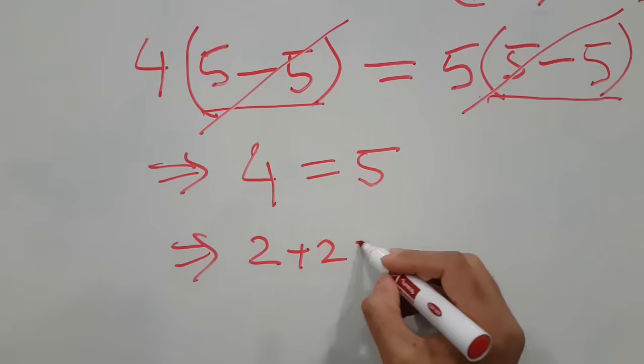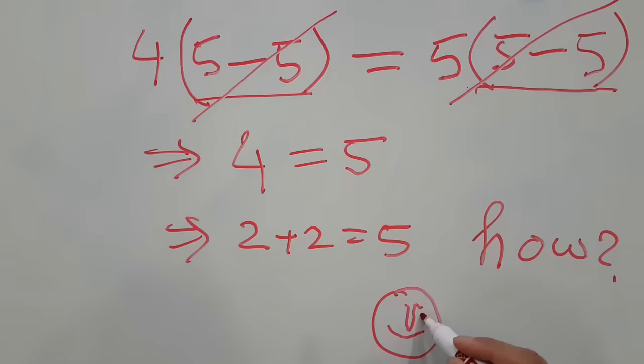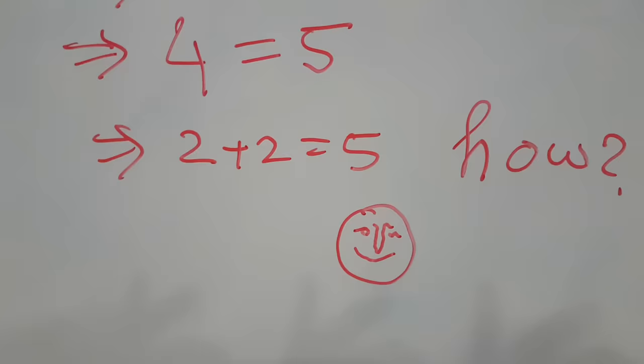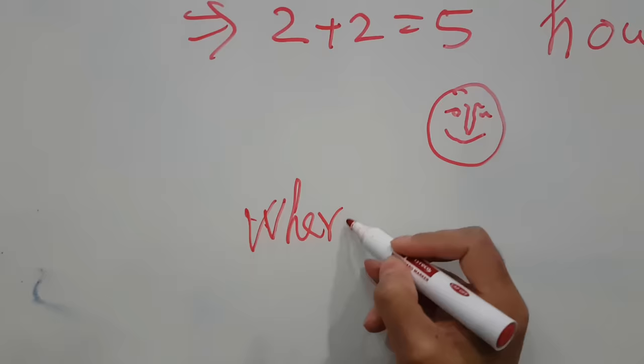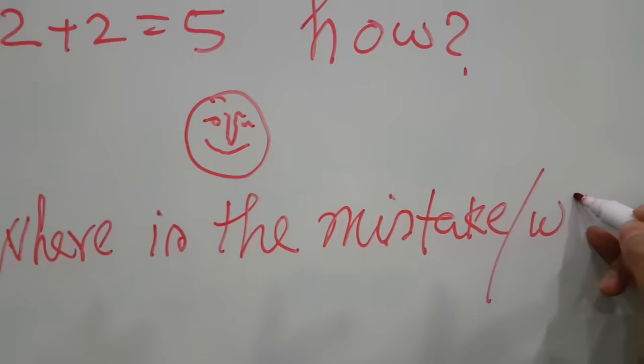So I have proved here that 2 plus 2 is equal to 5! Of course, according to mathematics it is not possible. I made a very clever mistake intentionally. Your task is to find out where the mistake is that I have made — that means, somewhere in this calculation I broke the rules of mathematics.